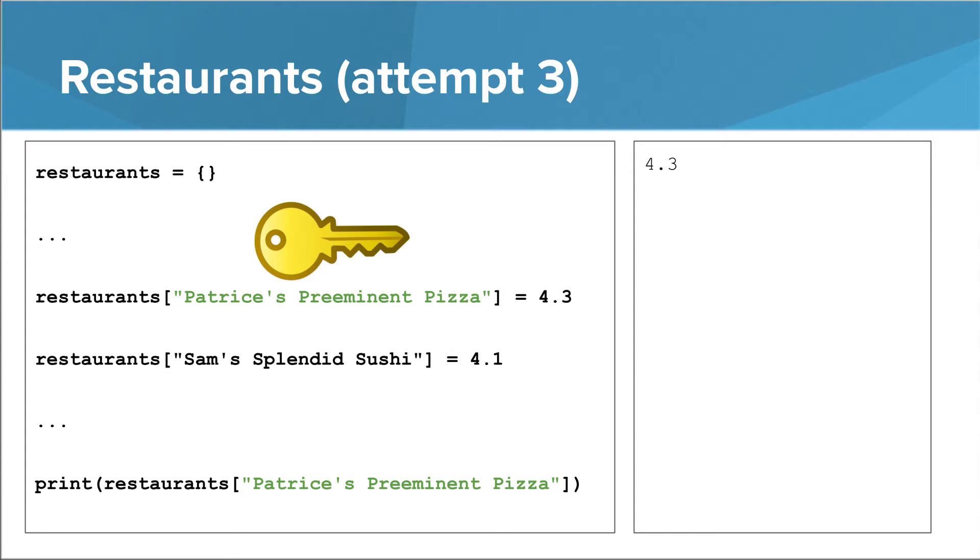We can retrieve the value for a certain key the same way we retrieve the thing at a particular index in a list. We put the key in square brackets. Note that unlike lists, there isn't really a notion of appending to a dictionary the way there is with a list. You just set the value of a particular key using square brackets.